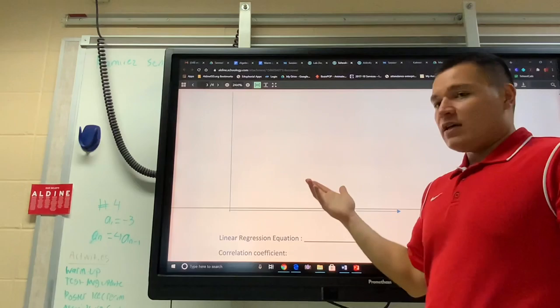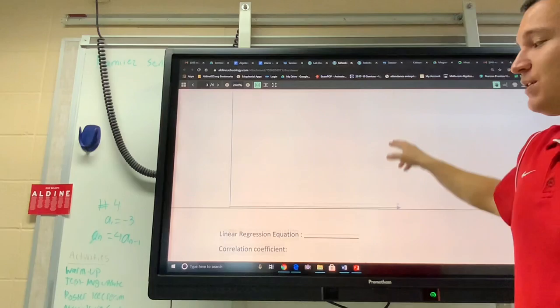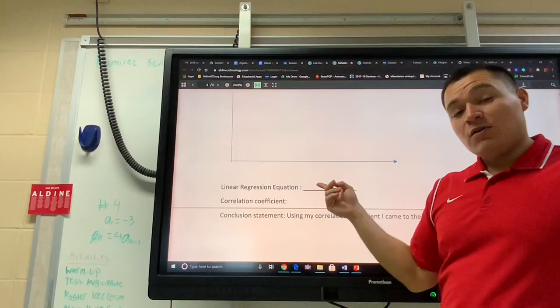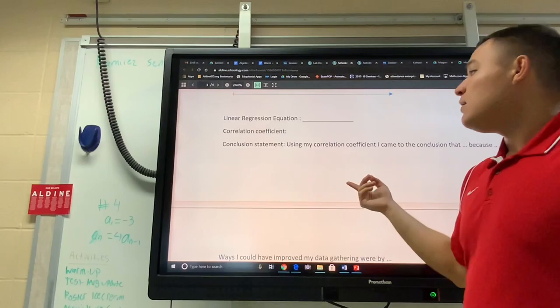It could be age and it can be clothes, it could be height and it could be bounce height, it could be repetitions and heart rate, and you're going to make a scatter plot and draw the linear regression. Draw the linear regression, calculate the correlation coefficient, calculate the equation using Desmos.